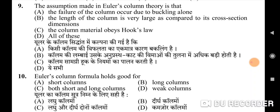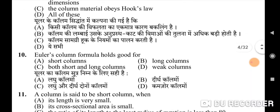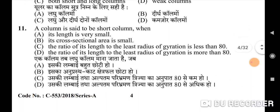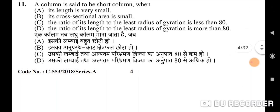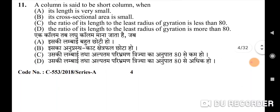Eleventh question: a column is said to be a short column when — correct option is C: the ratio of its length to the least radius of gyration is less than 80.